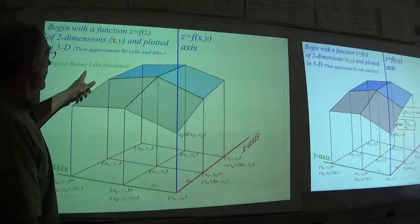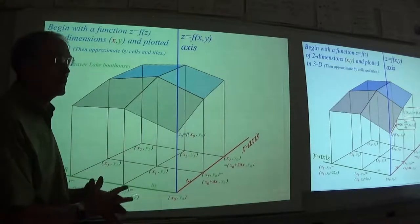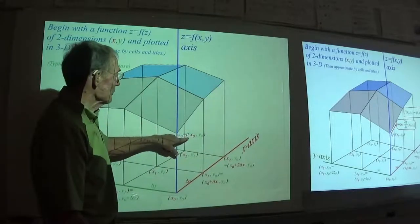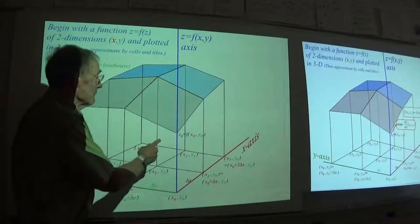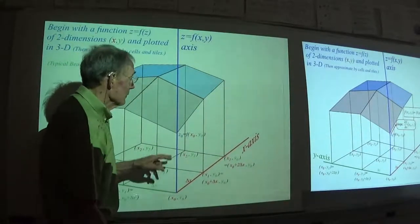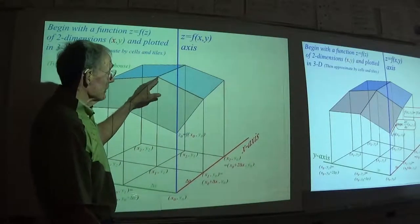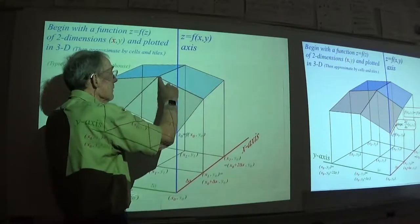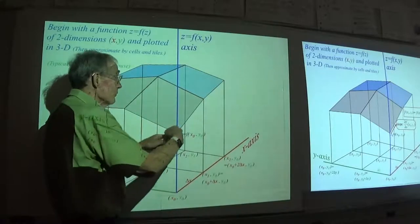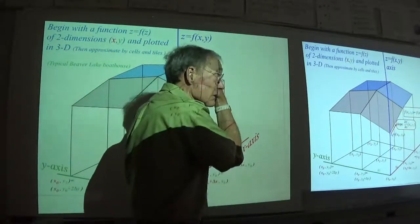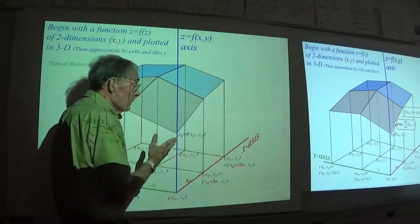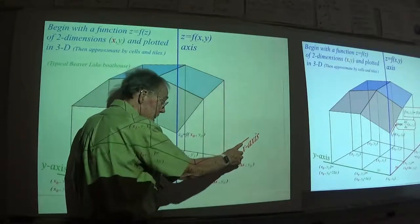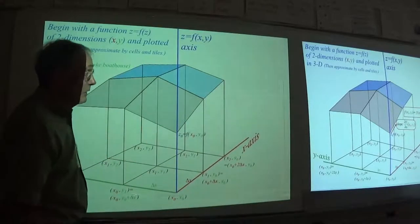I'm trying to represent a function of two variables using the analogy of a boathouse on Beaver Lake—a somewhat rickety structure with a wavy roof. We take a derivative first going up one path, then doing a completely different calculation going up another path. The idea is that those two directions should give the same answer—that's really the idea of partial derivatives, where one or more independent variables is held constant while you vary a single one, say x or y.